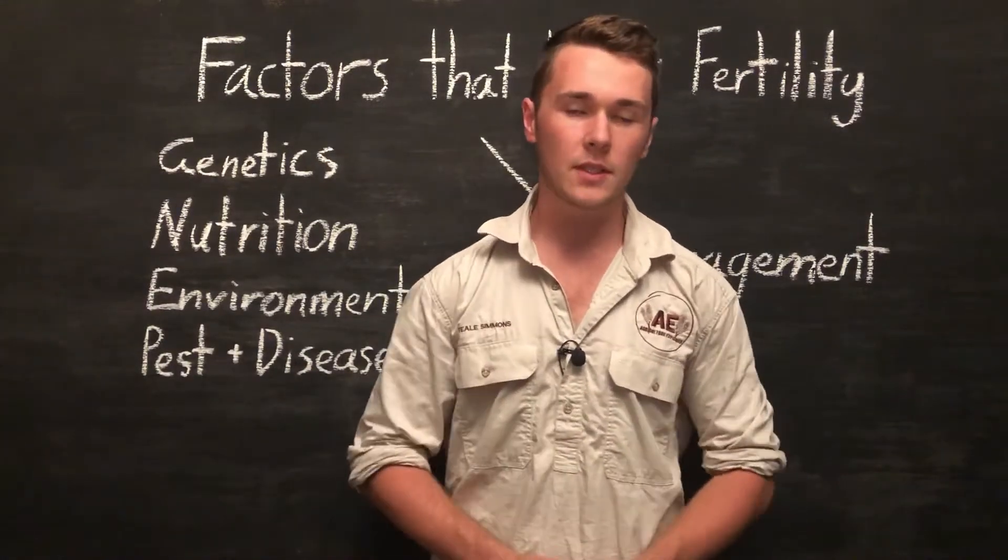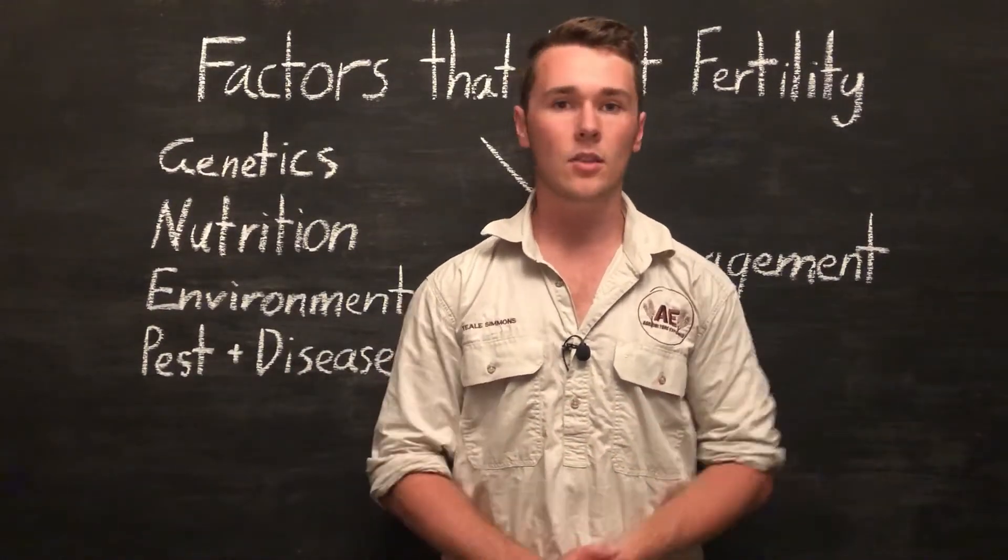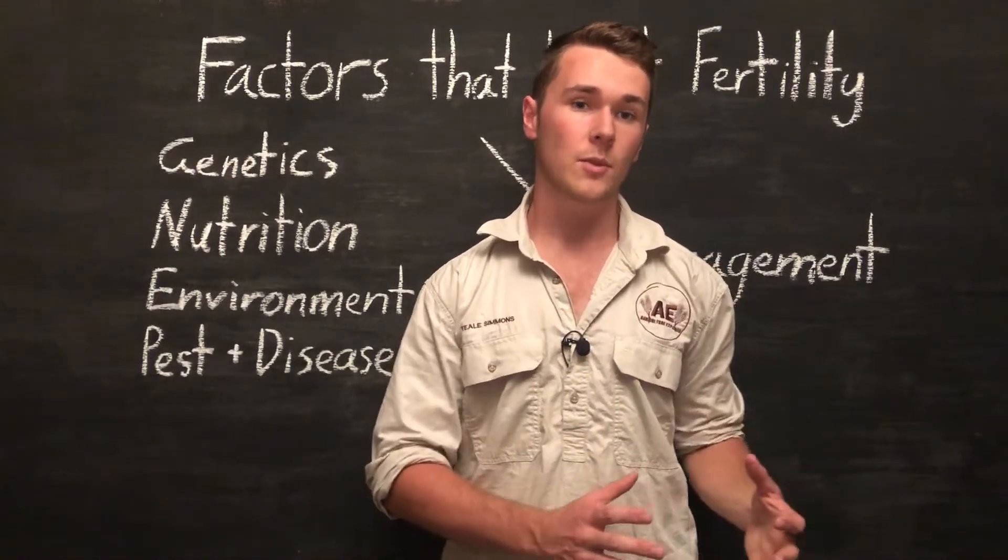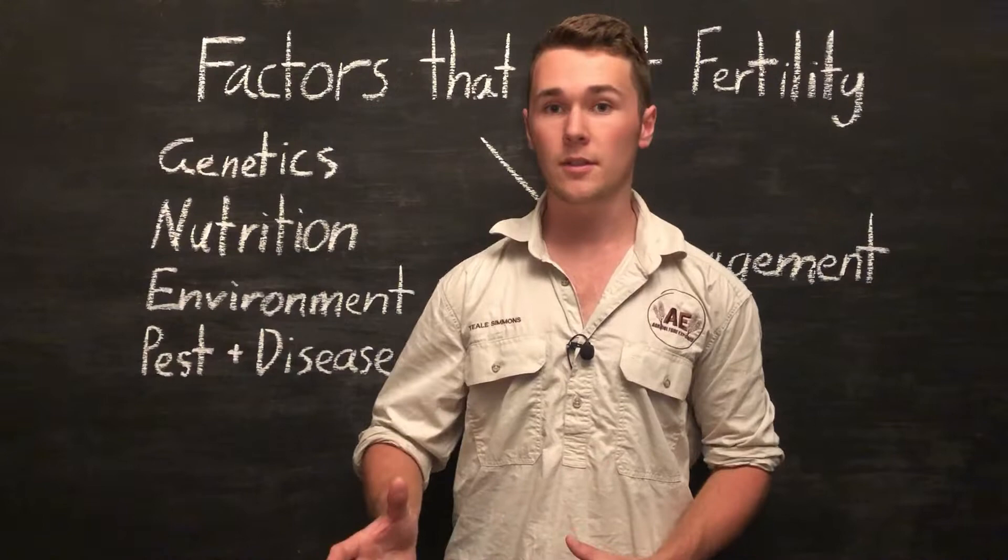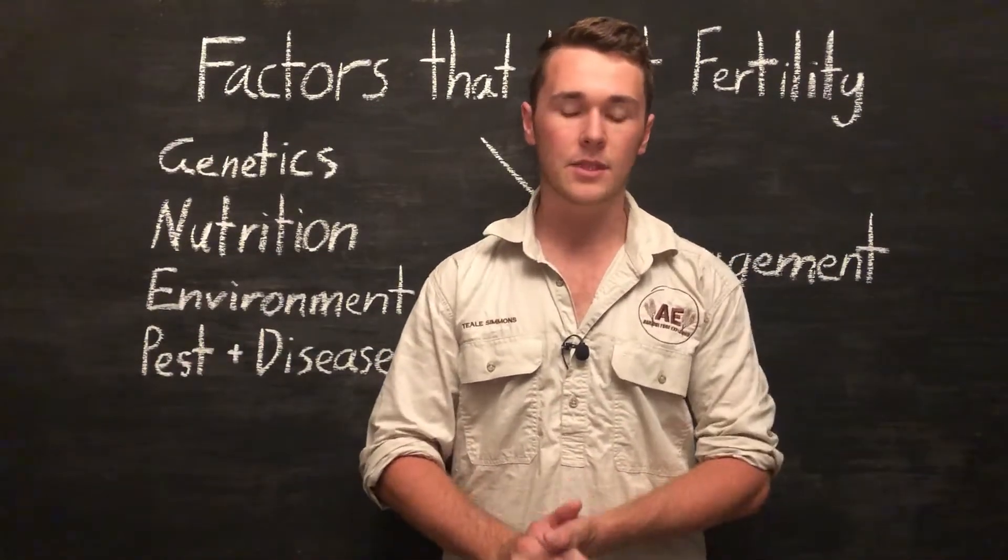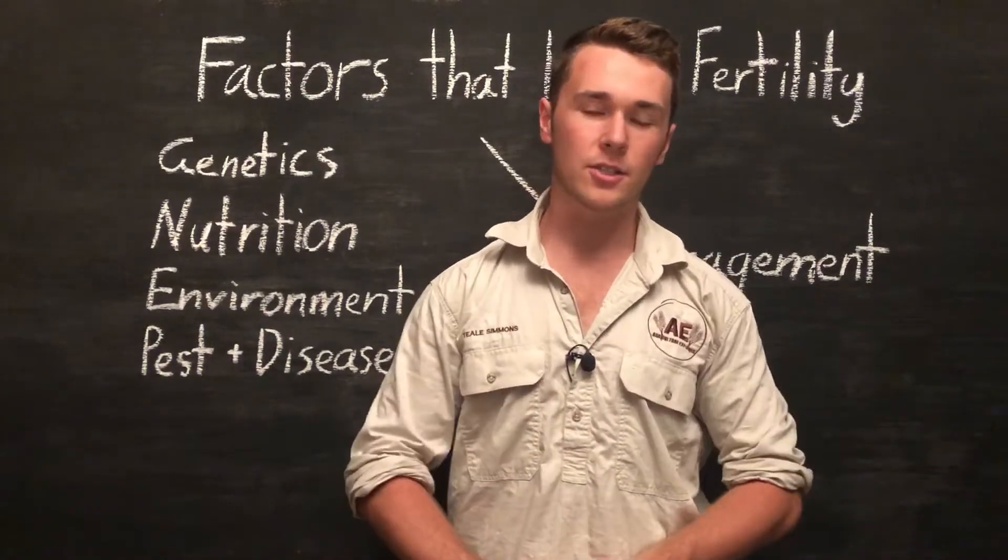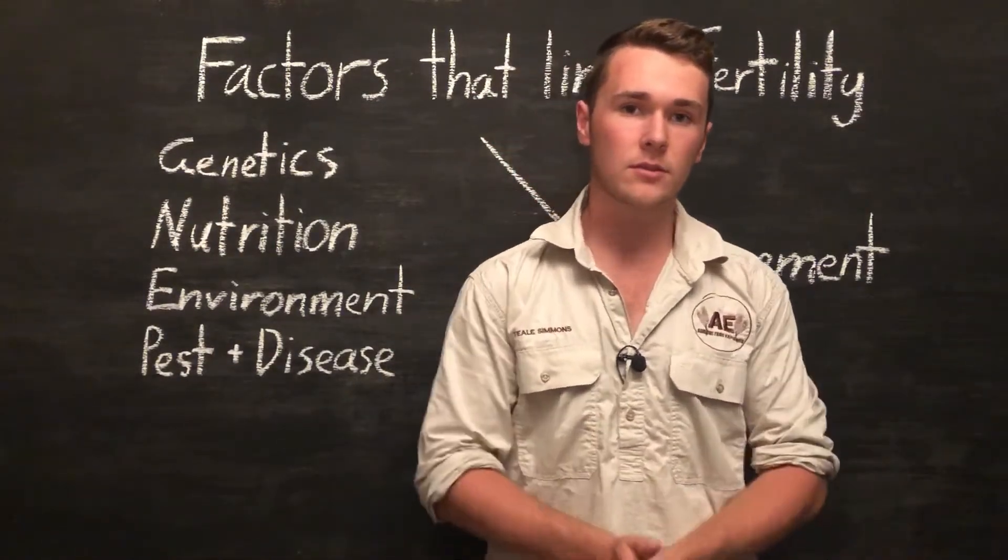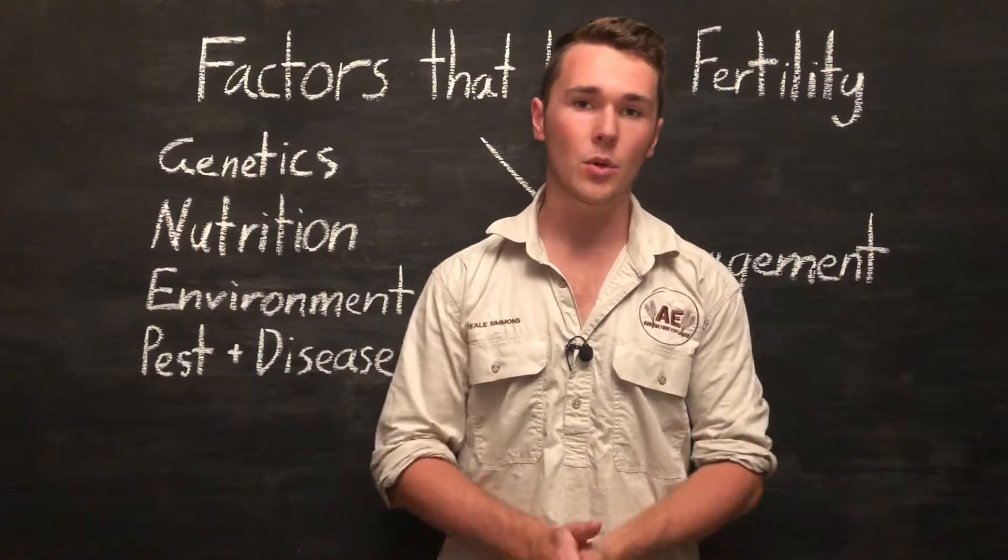But let's say we worked on the fertility of our ewes so that they could produce two lambs each. That means we could reduce the number of ewes we have on our farm to 33 ewes and then they could produce 66 lambs. This would ultimately increase production as we've reduced the amount of males we need to feed from the ewes, and we can use the extra feed to feed more lambs.